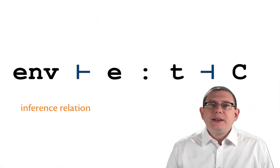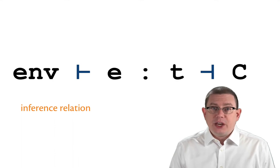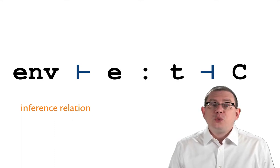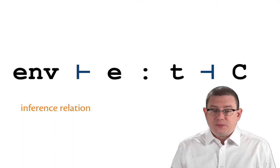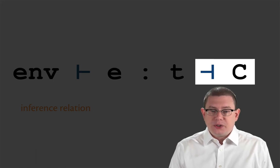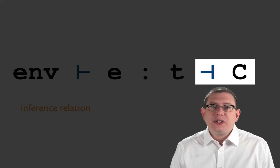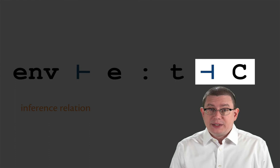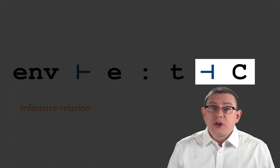We're going to extend the type checking relation that we had before to a type inference relation. We do that by adding one new piece at the end, which is written with this funny little backwards turnstile, C, where C is a set of constraints. It's a set of those equations on types.